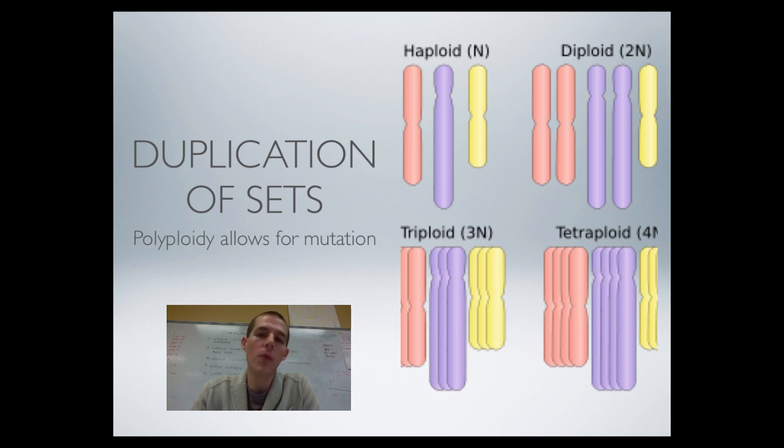Now, there are some rare occasions where a gamete, a sperm or an egg, will pick up an extra set of genetic material. So instead of being haploid like usual, that sperm or egg is indeed diploid. Once that fuses up with the sperm or egg from the mate, you could end up with a triploid or tetraploid situation.